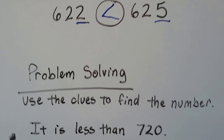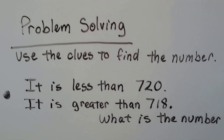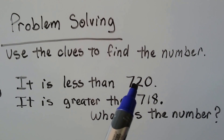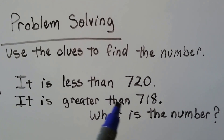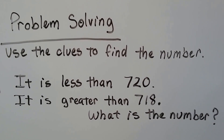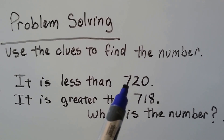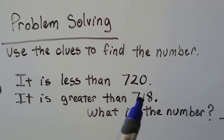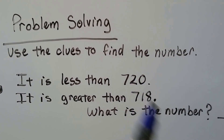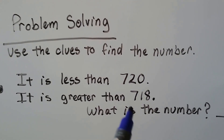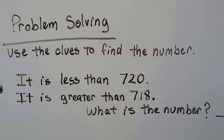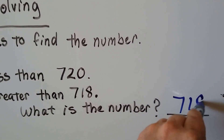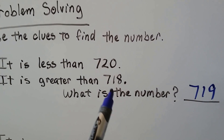Let's try some problem solving skills. We're going to use clues to find a missing number. First clue: it's less than 720. Next clue: it's greater than 718. So it can't be 720 and it can't be 718. What number comes after 718? If you said 719, you're right. 719 is less than 720 and greater than 718.